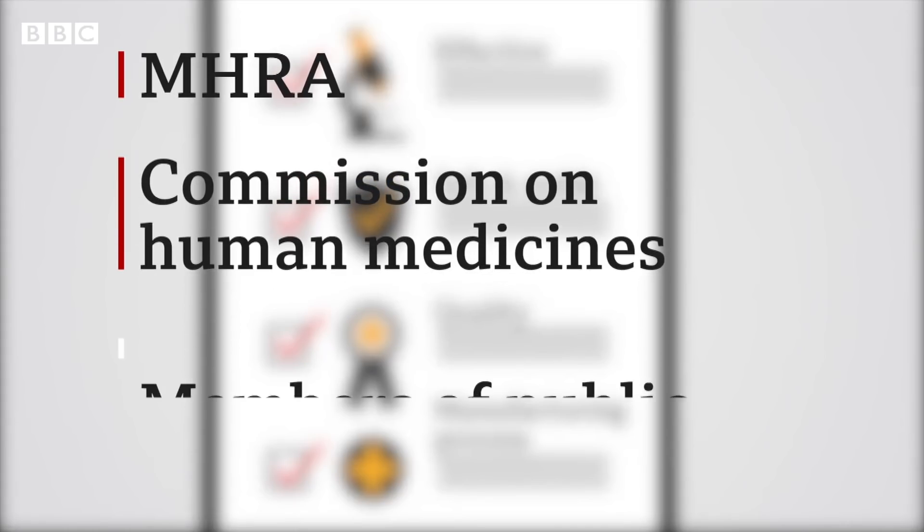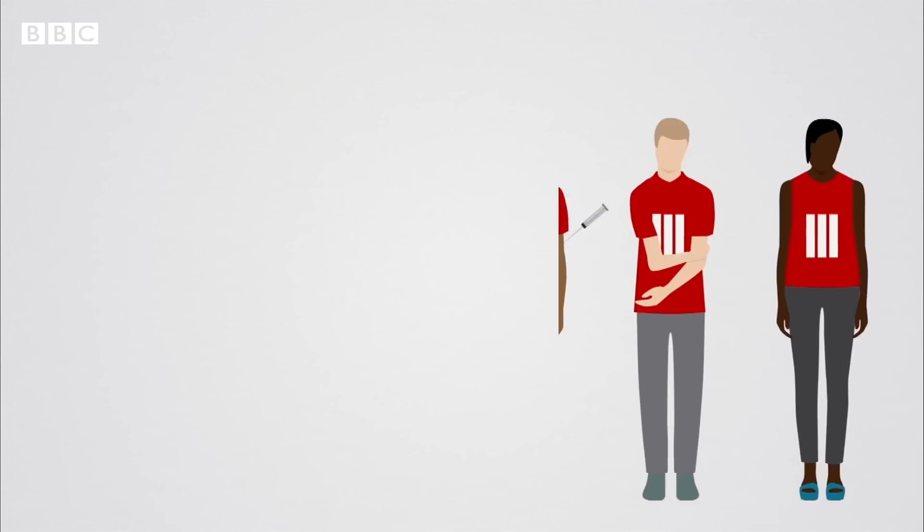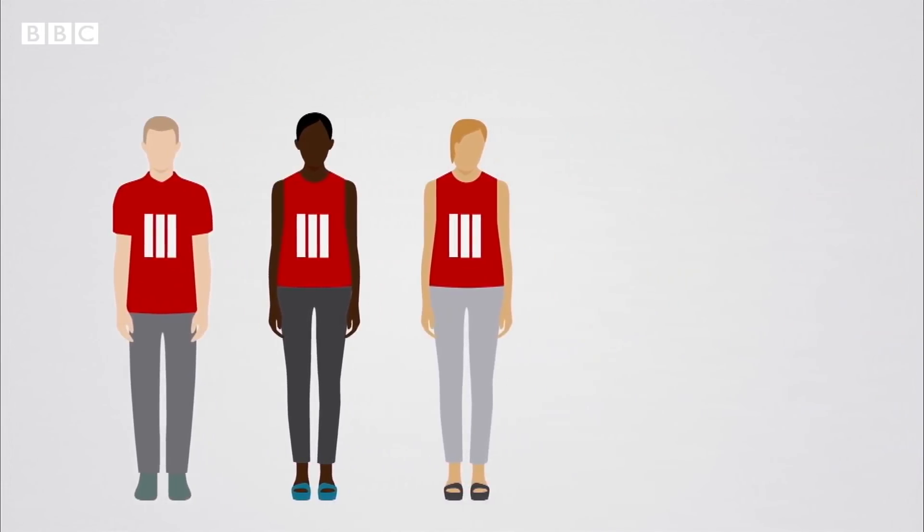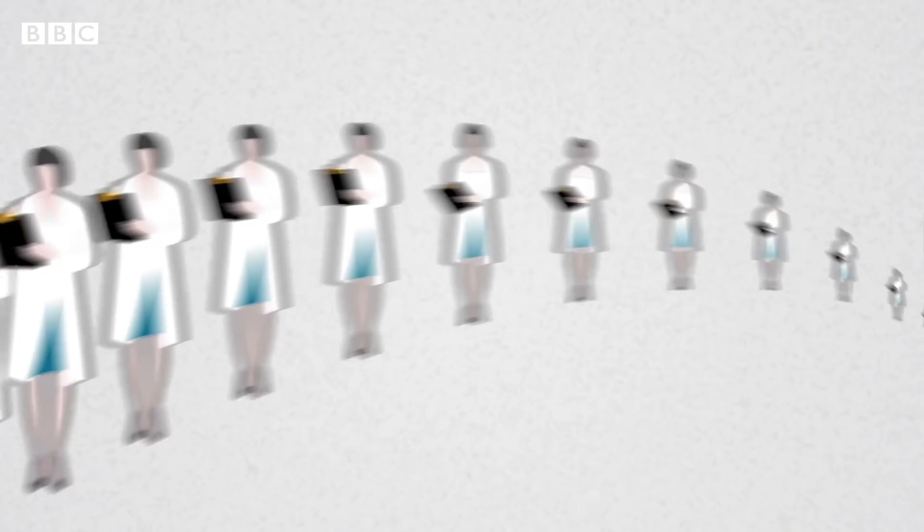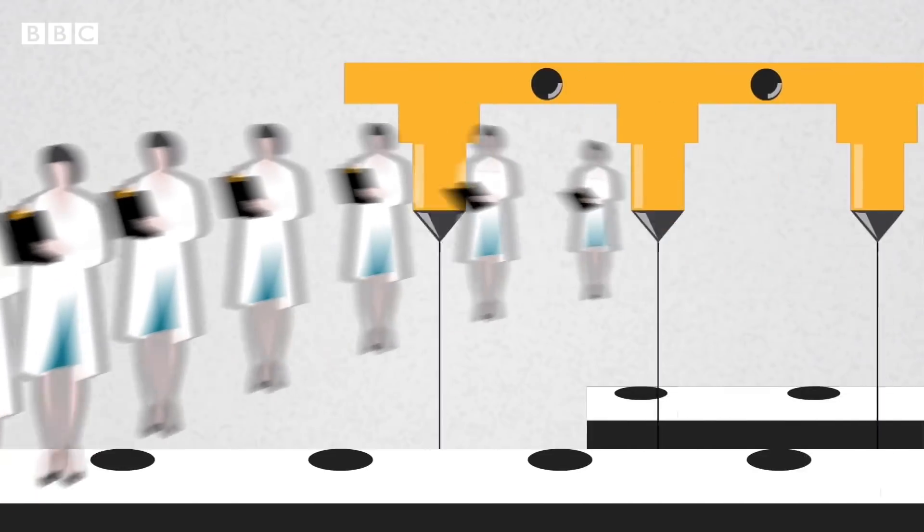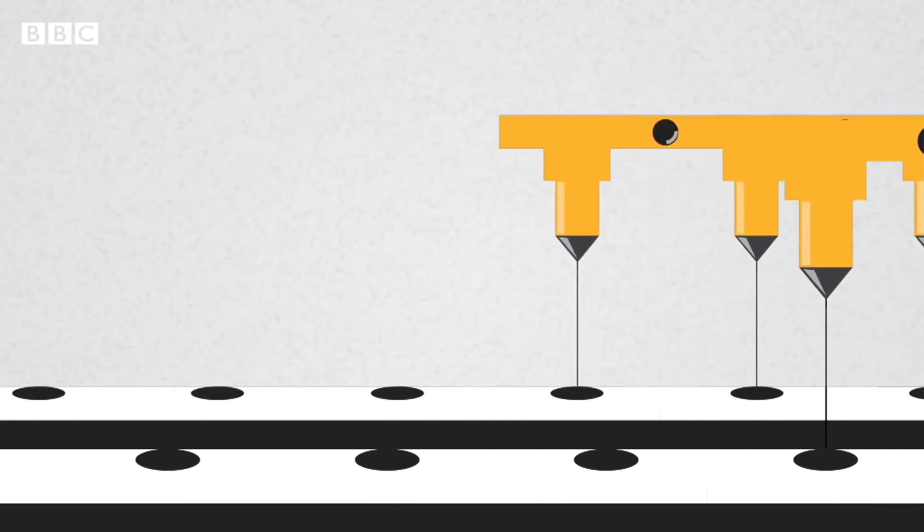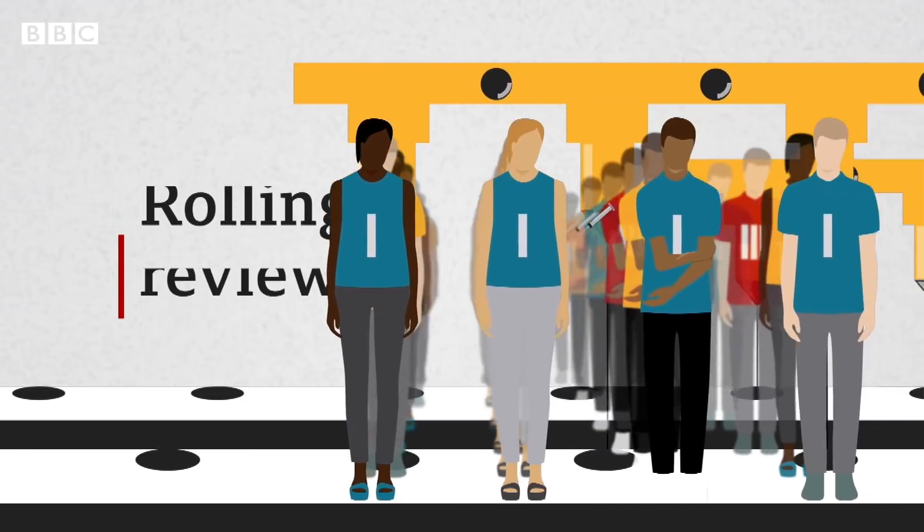In the UK, this is the job of the MHRA, the Commission on Human Medicines, and even members of the public are asked what they think. Normally, this happens after all the trials have ended, but in the case of COVID-19, the UK's regulatory body was being given data as the trials went along. This is called a rolling review.